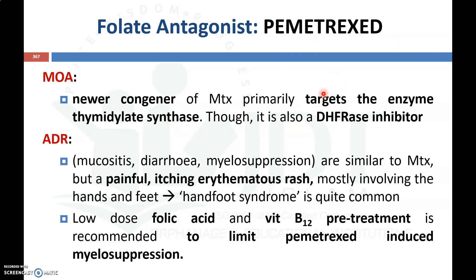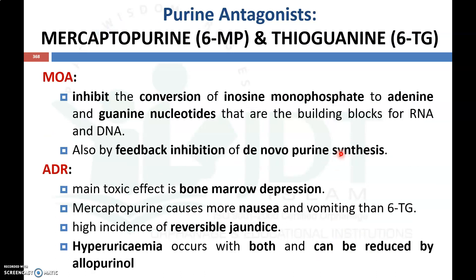Another important folate antagonist is pemetrexate, a newer congener of methotrexate. Its primary target enzyme is thymidylate synthetase, though it also has some action at dihydrofolate reductase. Adverse drug reactions include mucositis, diarrhea, and myelosuppression, similar to methotrexate. It also causes painful, pruritic erythematous rashes involving the hands and feet — known as hand-foot syndrome. Folic acid and vitamin B12 supplementation are recommended as pre-treatment alongside pemetrexate to manage its induced myelosuppression.